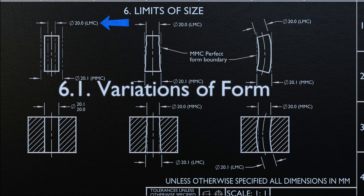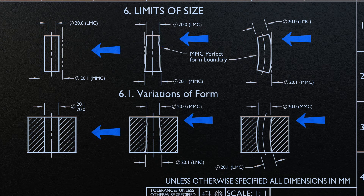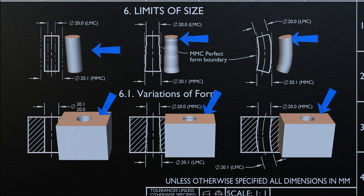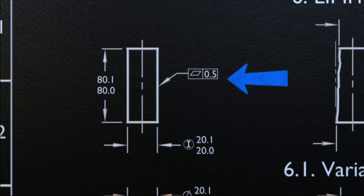First, we are going to discuss the variations of form. The form of an individual regular feature of size is controlled by its limits of size to the extent prescribed as illustrated. You will see this on the drawing, and it allows this form. The surface or surfaces of a regular feature of size shall not extend beyond a boundary envelope of perfect form at MMC. This boundary is the true geometric form represented by the drawing.